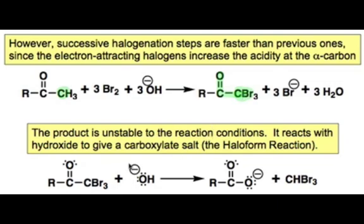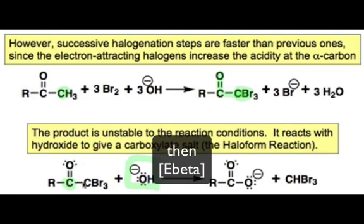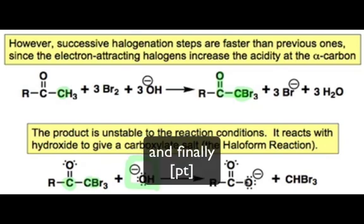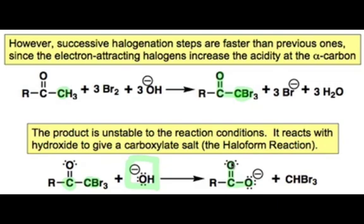Hydroxide anion is able to nucleophilically add to this relatively electrophilic carbonyl group and then displace the tribromomethyl group in an elimination-type process to give, after a proton transfer, a carboxylate group and bromoform. A haloform is a methane derivative in which three of the hydrogens in CH4 have been replaced by halogen atoms. Because this reaction leads to the formation of haloforms, it's been aptly called the haloform reaction.